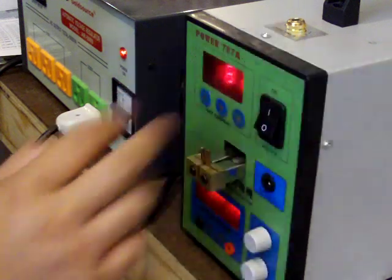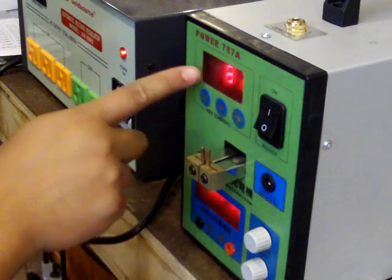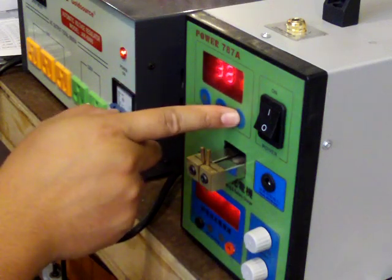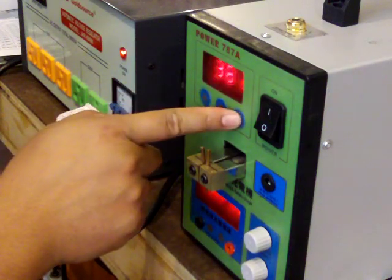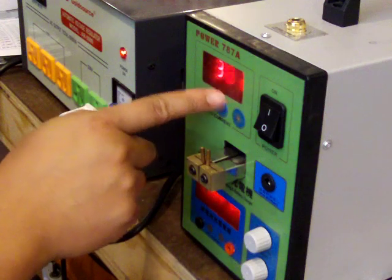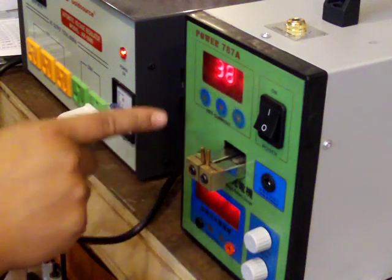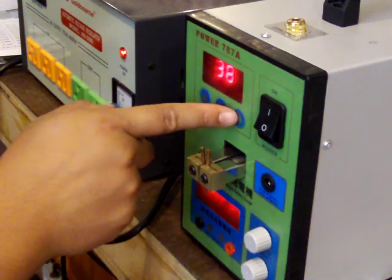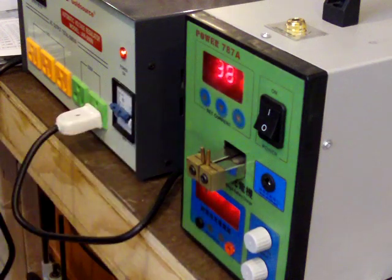This is how you change it here. You can change your current, set to 38, and you can change how many pulses there are. I like to leave it at two, and once it stops blinking, it's set to go.